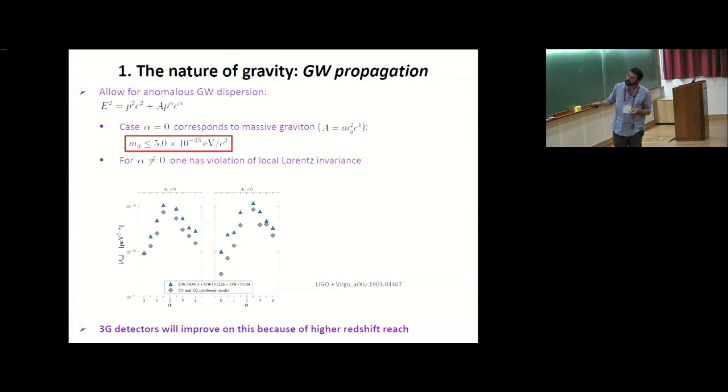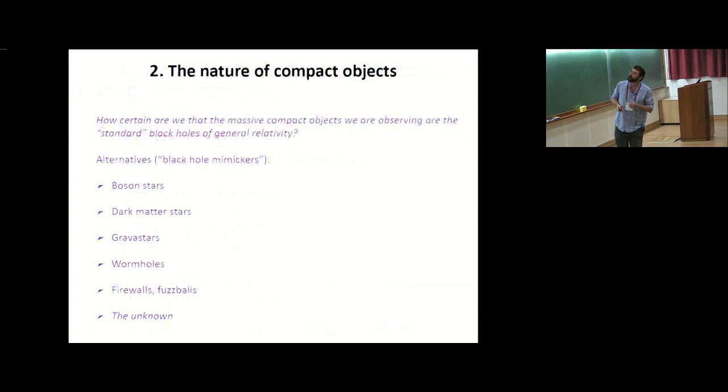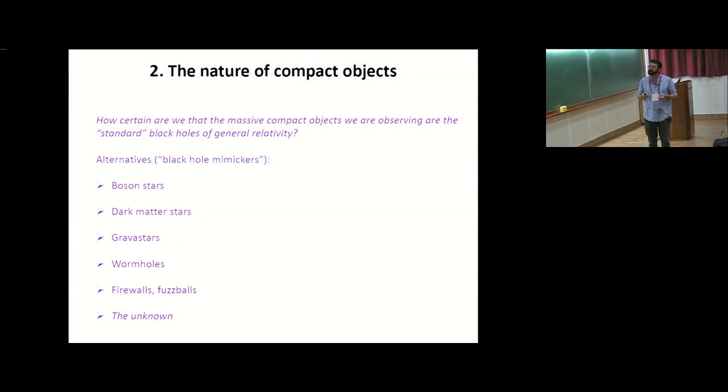In this case, 3G detectors will improve because of the much higher distance to which you can see things. You can see signals that will have propagated over larger distances, and whatever anomaly in terms of dispersion is present will have built up even more. Secondly, that was the nature of gravity. Now we come to the nature of compact objects. How certain are we really that the component objects were black holes, or rather the standard black holes of general relativity?